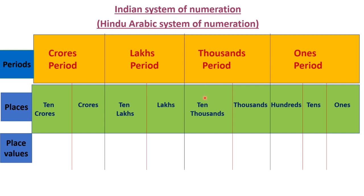For four digit and five digit numbers we will utilize thousands period as well as ones period. Lakhs period has two places: lakhs and ten-lakhs. So for six digit or seven digit numbers we will use lakhs period. Crores period also has two places: crores and ten-crores, used for eight digit and nine digit numbers.